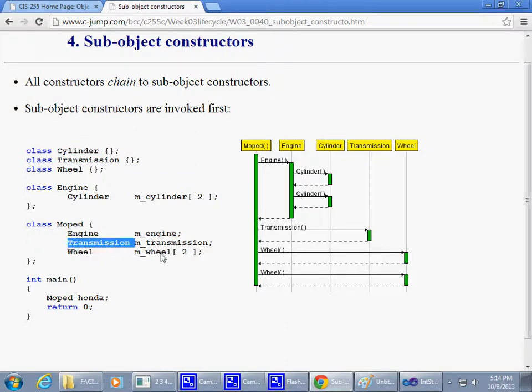Then there is a transmission, and the transmission is just one single object, and it's defined here, so everything's okay. So the transmission constructor is invoked next. It finishes, then we construct an array of two wheels. And guess what? Twice the constructor of the wheel class is also called.